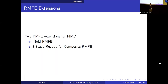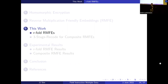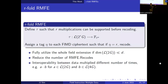We have two extensions for applying RMFE in FIMD. The first is R4-RMFE: instead of defining tau from L(2G), we define tau from L(2^R · G), allowing R multiplications before needing a recode. We assign a tag to the ciphertext and recode when the tag reaches R. Since HE extension fields are typically much larger than what RMFE Riemann-Roch spaces provide, R4-RMFE allows us to use the full field extension more efficiently, reducing the number of costly recodes. An interesting feature is interoperability between data multiplied different numbers of times — data in 2G and 4G can still be multiplied together.